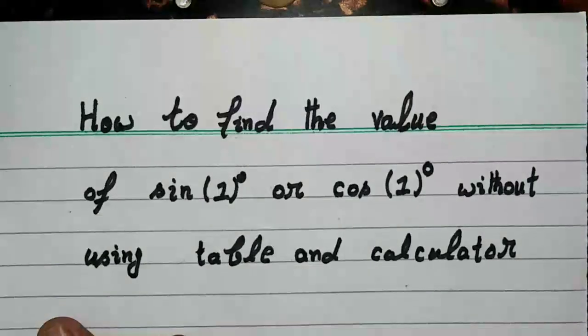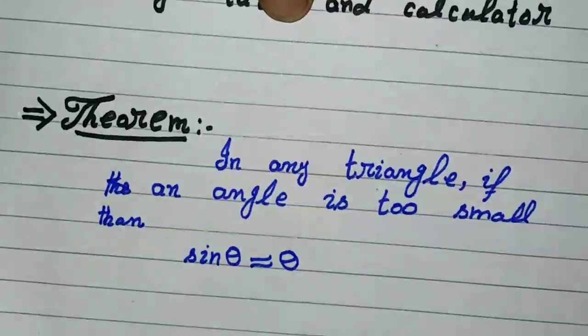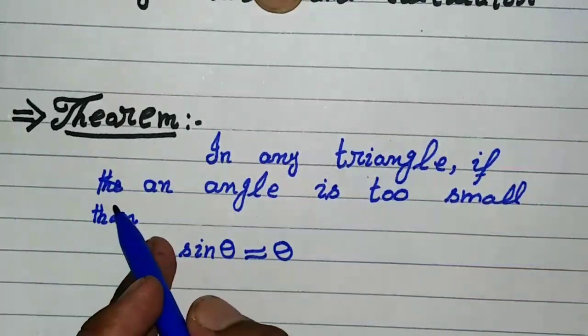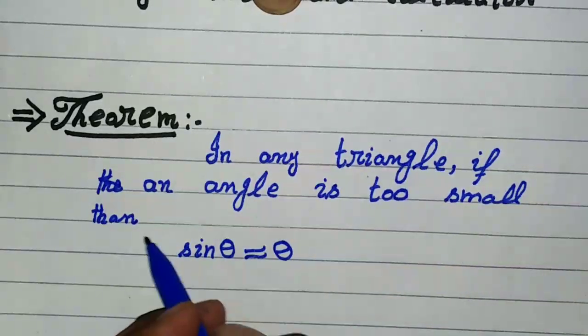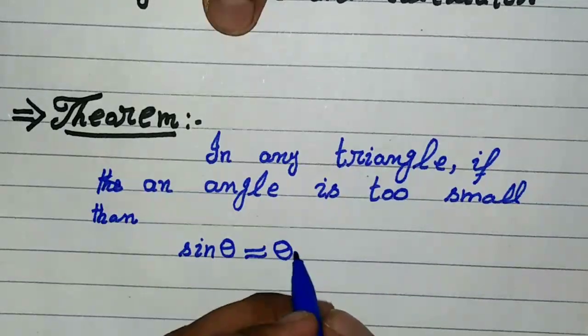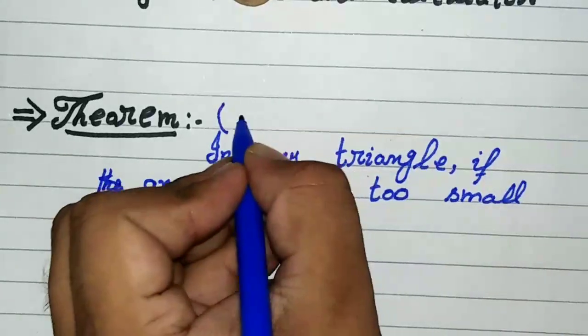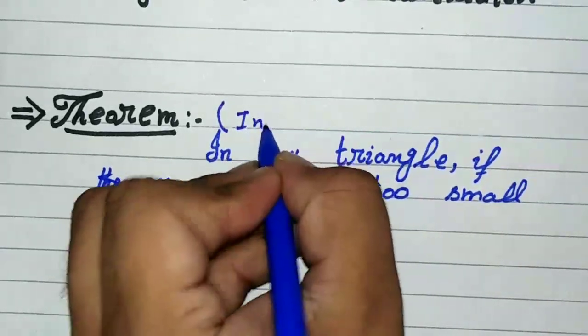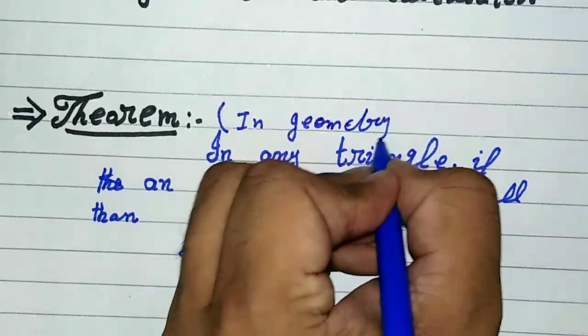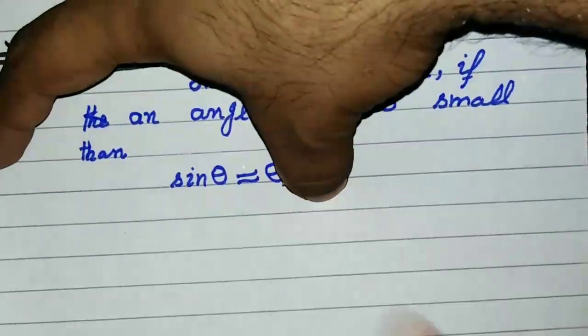Let us start our video from the statement of a theorem. In any triangle, if an angle is too small, then sine theta approximately equals theta. This is the theorem as you have studied in classical geometry or school geometry.